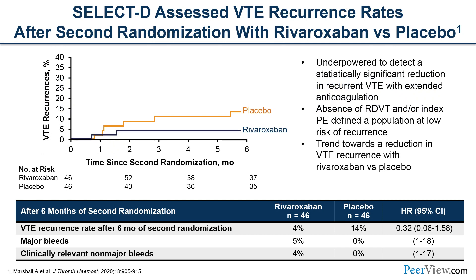The data supporting DOACs for both initial and long-term treatment comes from several clinical trials. SELECT-D was one randomized trial looking at VTE recurrence rates with rivaroxaban versus placebo, showing a reduction in recurrent VTE with rivaroxaban. Although it did show an increased risk of major bleeding — this was a relatively smaller trial — there was also an increased risk of clinically relevant non-major bleeding. One lesson from SELECT-D was that bleeding seemed to be restricted to cancer patients with a GI primary, particularly gastric or esophageal cancer. Moving forward, many trials excluded these patients. Overall, it showed high success in preventing recurrent VTE but raised some concern for bleeding risk.